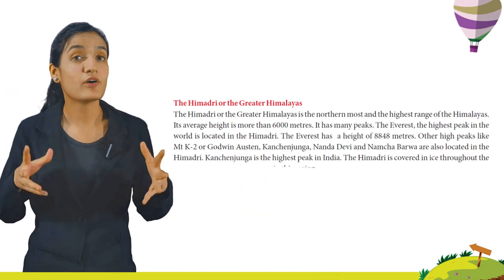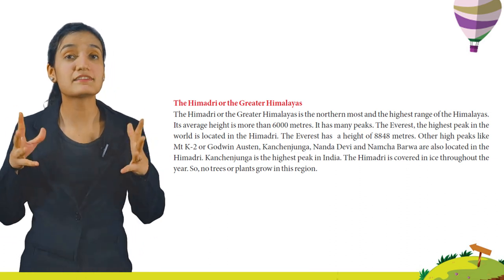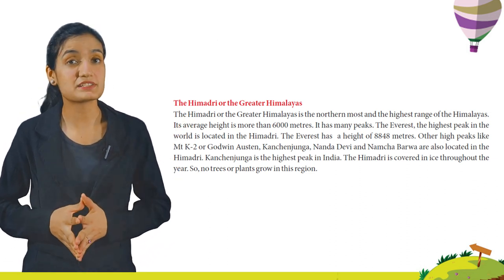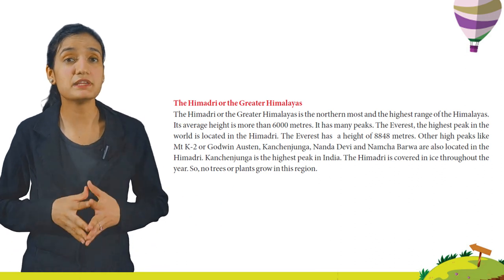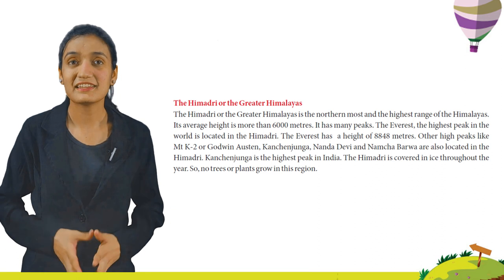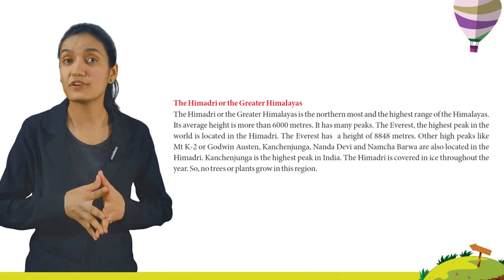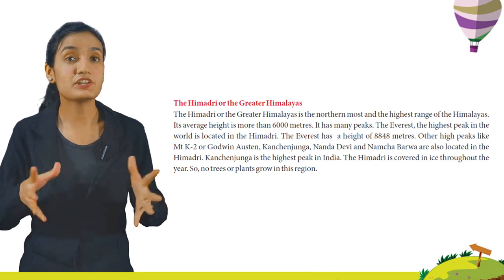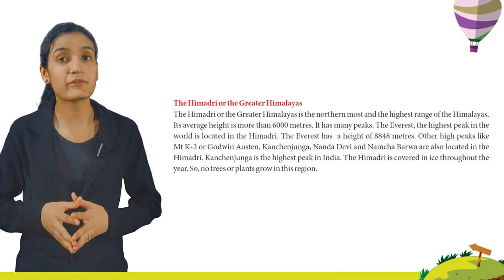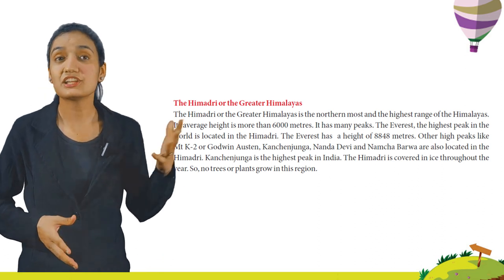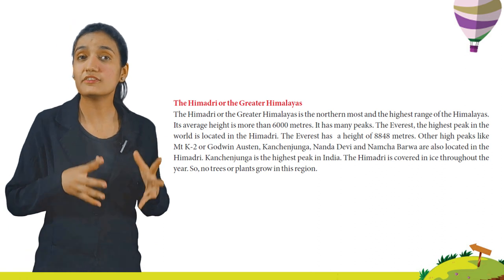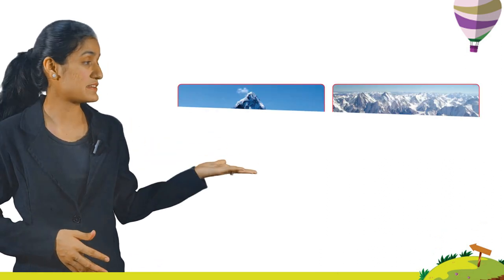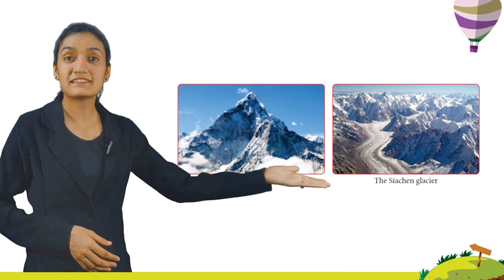The Himadri or the Greater Himalayas is the northernmost and the highest range of the Himalayas. Its average height is more than 6,000 meters. It has many peaks. The Everest, the highest peak in the world, is located in the Himalayas with a height of 8,848 meters. Other high peaks like K2 or Godwin-Austin, Kanchenjunga, Nanda Devi and Namcha Barwa are also located in the Himadri. Kanchenjunga is the highest peak in India. The Himadri is covered in ice throughout the year, so no trees or plants grow in this region. Here you can see the picture of Mount Everest and the Siachen Glacier.